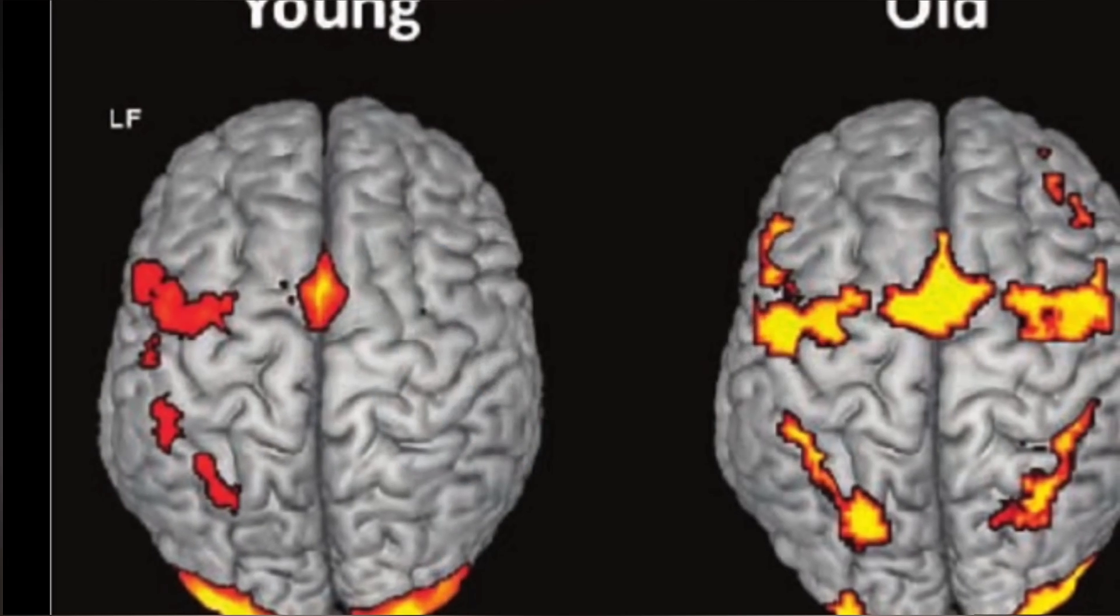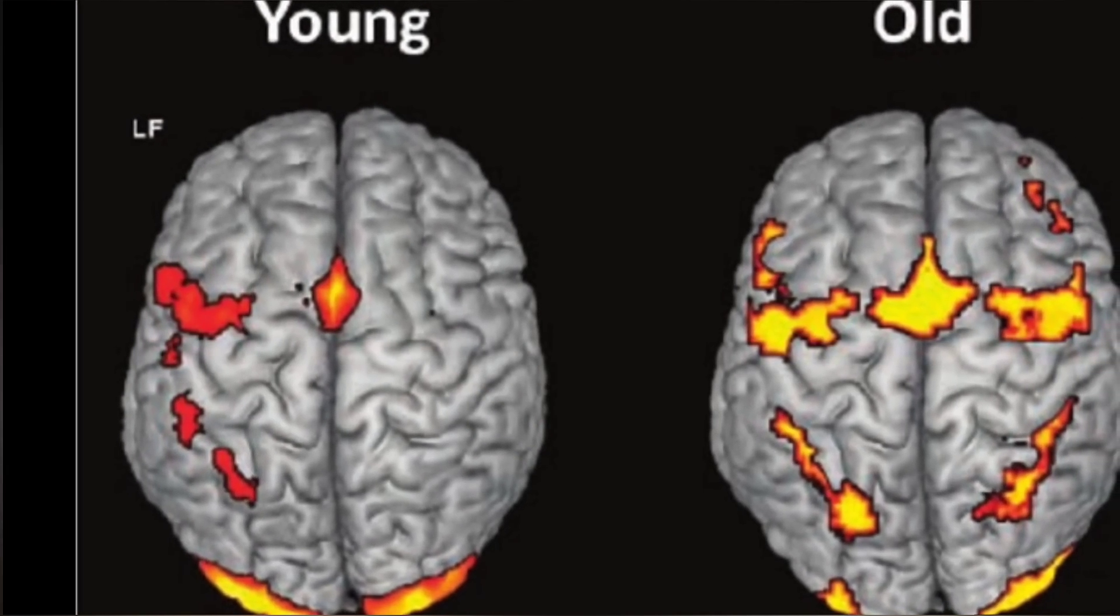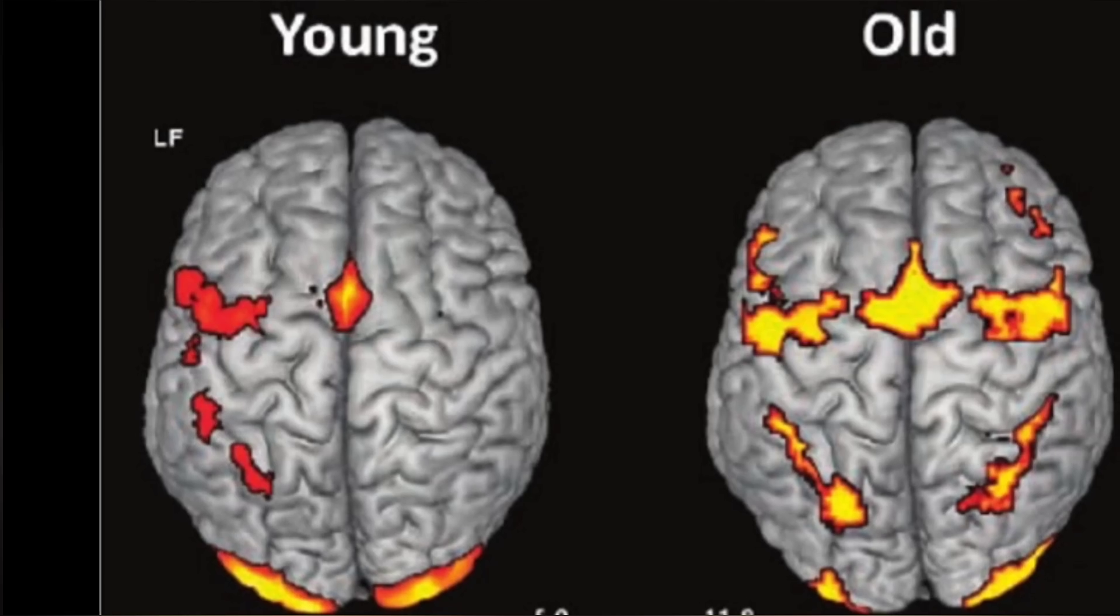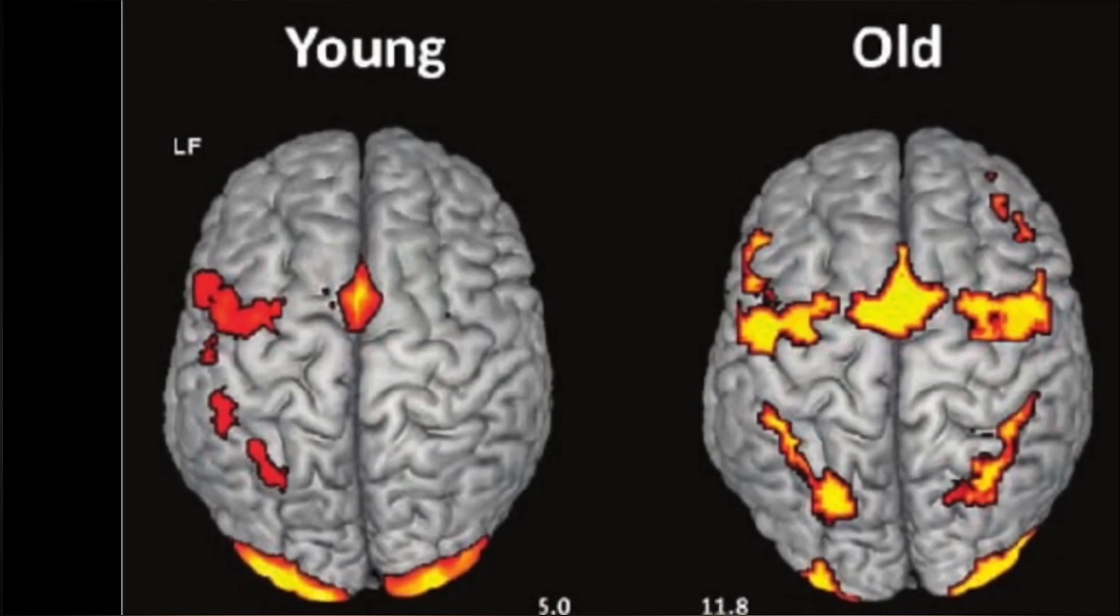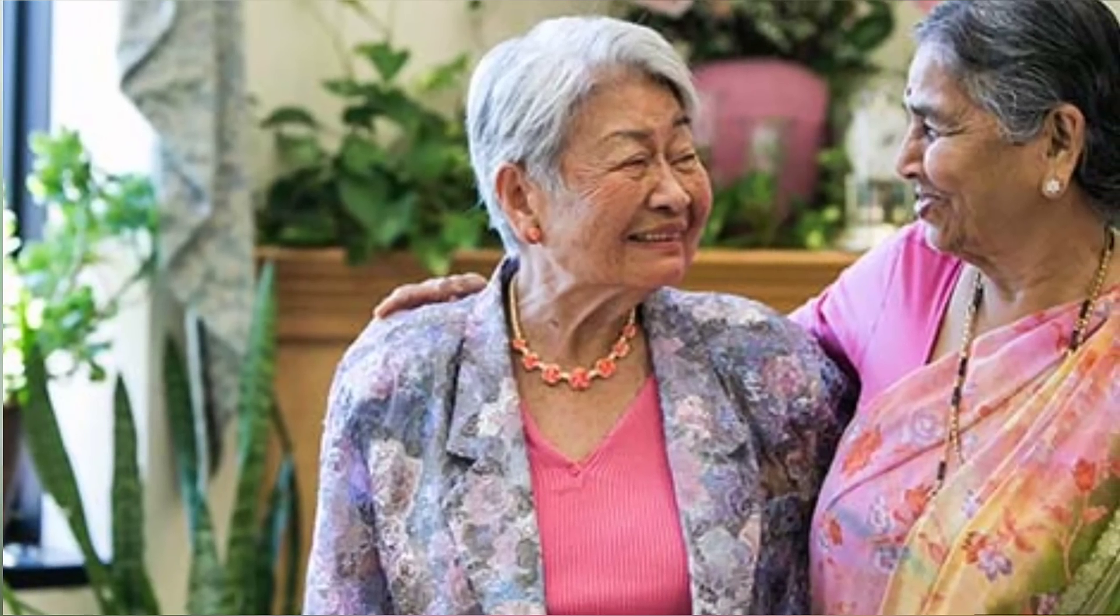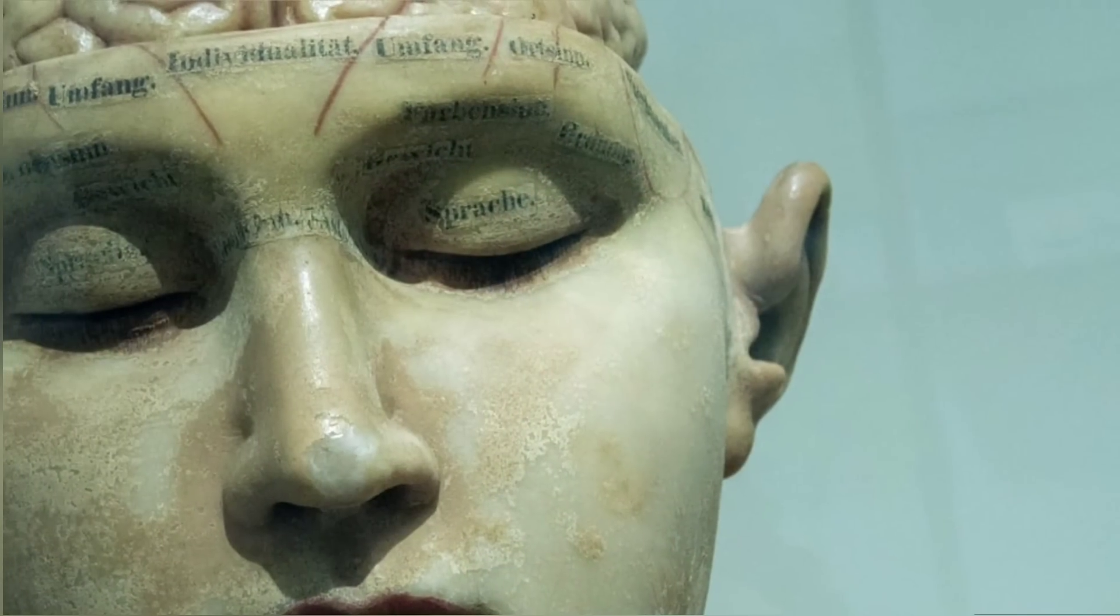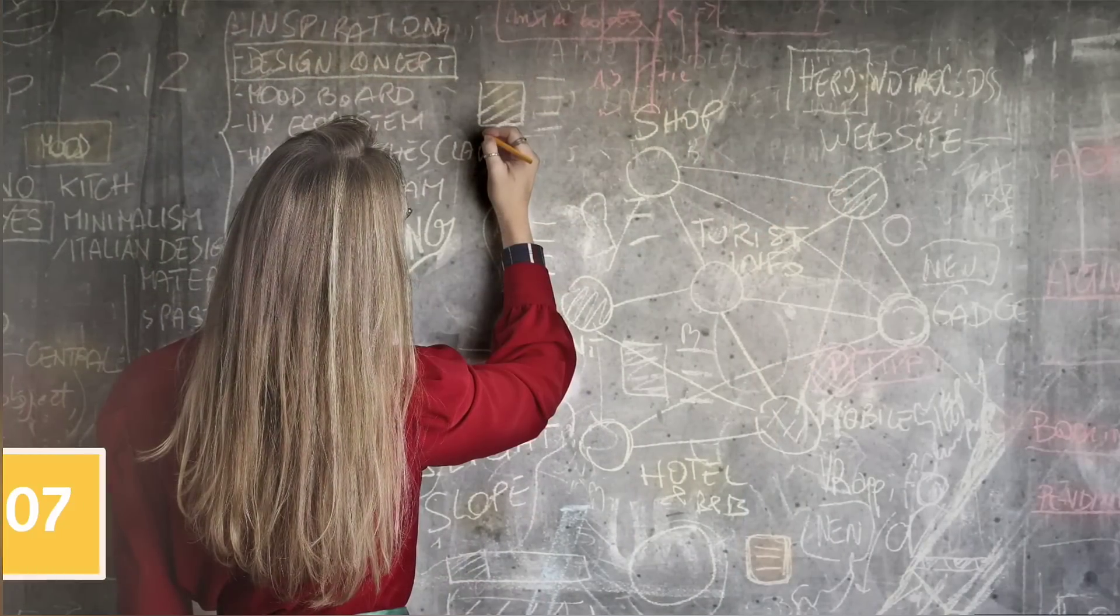Myth number six: the brain declines as you get older. The truth is though some cognitive functions do decline as you get older, plenty of your mental skills actively improve with age. Vocabulary, comprehension, conflict resolution, and emotional regulation are just a few areas in which older brains can perform better than their younger counterparts.